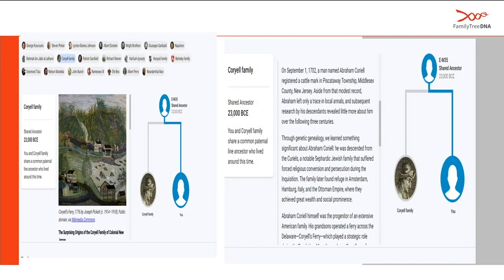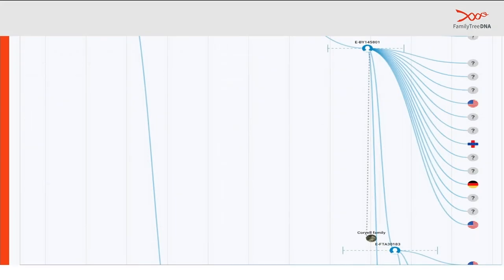This is another interesting family — the Coriel family. I have to give thanks to administrator Mr. Lee Coriel for making this happen. There's an awesome blog on his lineage on the website. They're here at EM35, which is an African branch, but there were some offshoots of those African branches that went into different countries. This is a snapshot of the Coriel family — all those other flags share that common ancestor, EBY145801.